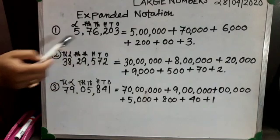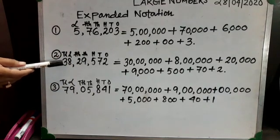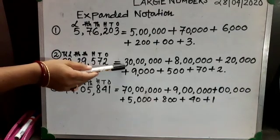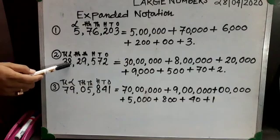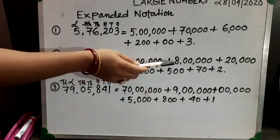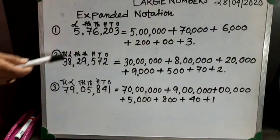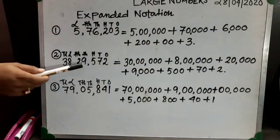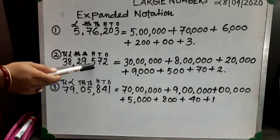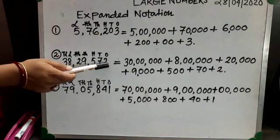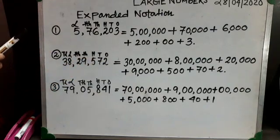We have to expand this number. First comes three, which is in the ten lakhs place, so I have written thirty lakh. Then eight is in the lakhs place, so I have written eight lakh. Twenty comes in the ten thousands place, so it is twenty thousand. Then nine is in the thousands place giving nine thousand, followed by five hundred, seventy, and two. In this way you can expand the numbers.